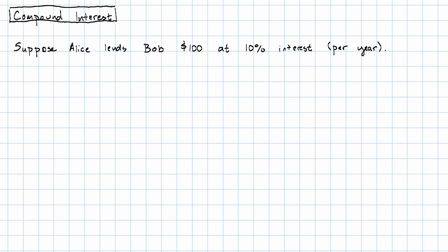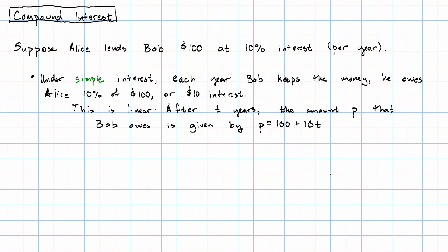So, under simple interest, each year that Bob keeps the money, he owes Alice 10% of $100, or $10 in interest. Now this situation is linear. After t years, the amount p that Bob owes is given by the equation p equals the starting value of $100 plus $10 each year times the number of years.